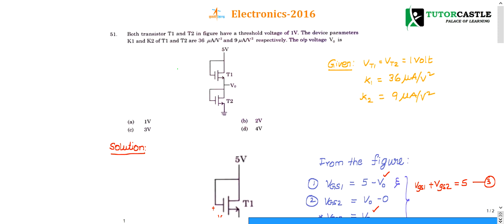Question number 51: both transistors T1 and T2 in the figure have a threshold voltage of 1 volt. The device parameters k1 and k2 of transistor 1 and transistor 2 are 36 microamperes per volt squared and 9 microamperes per volt squared respectively. The output voltage is to be determined.